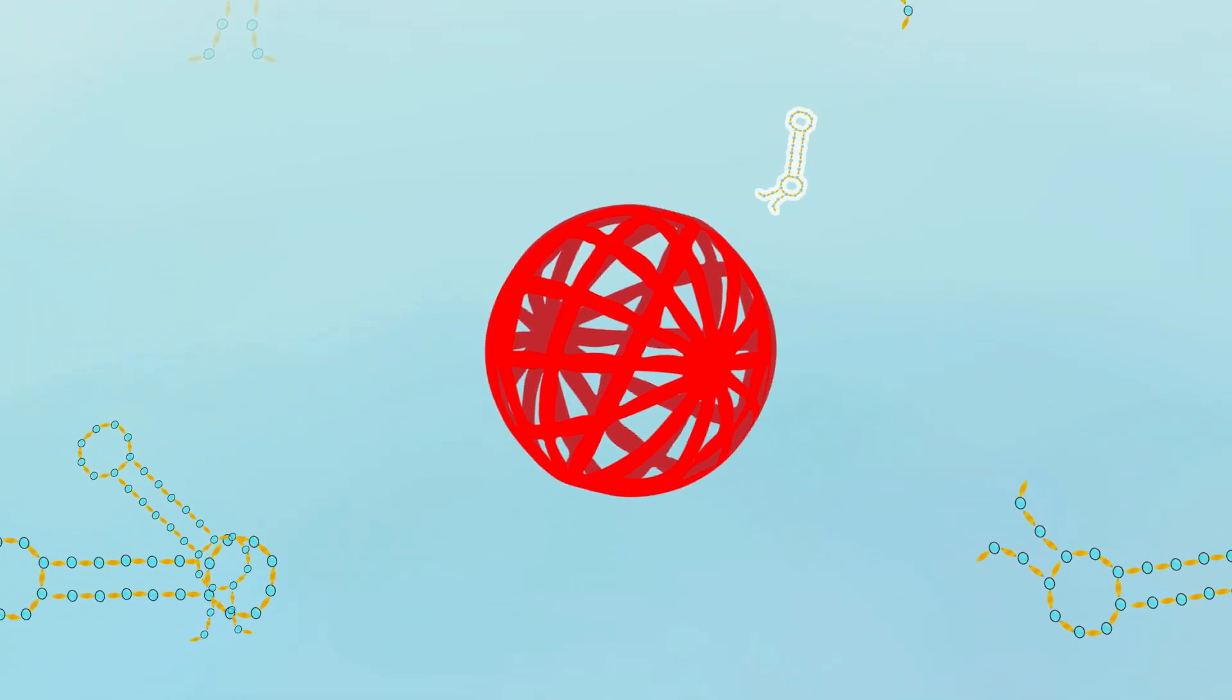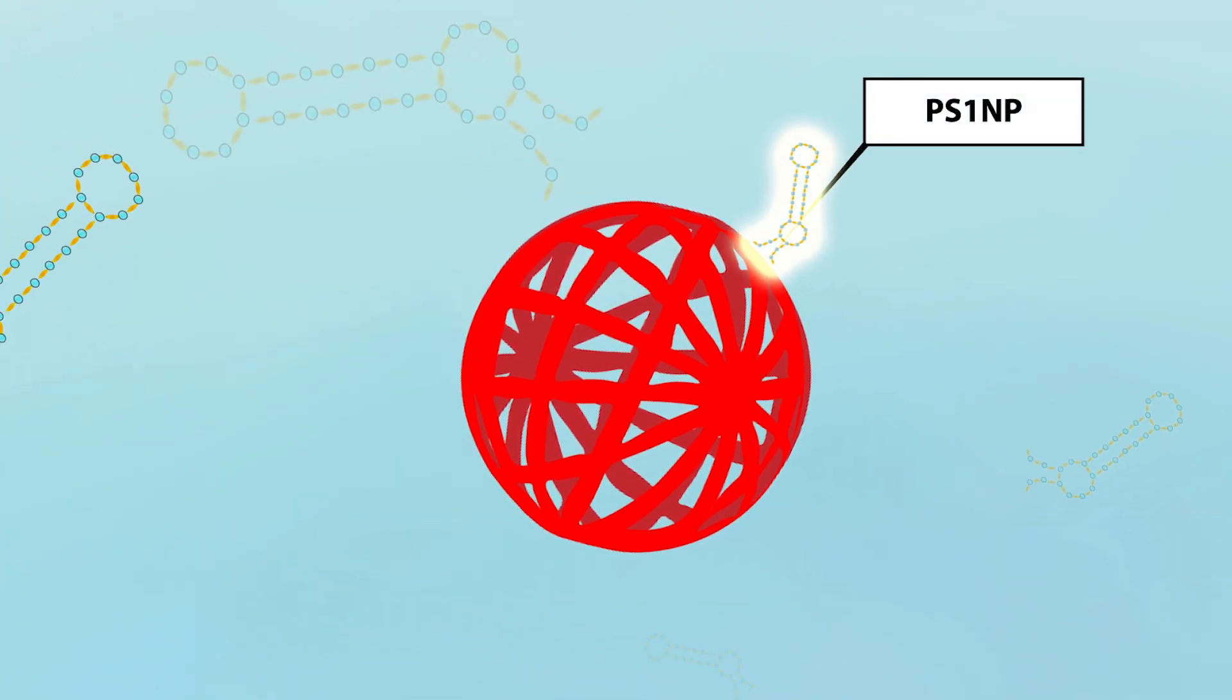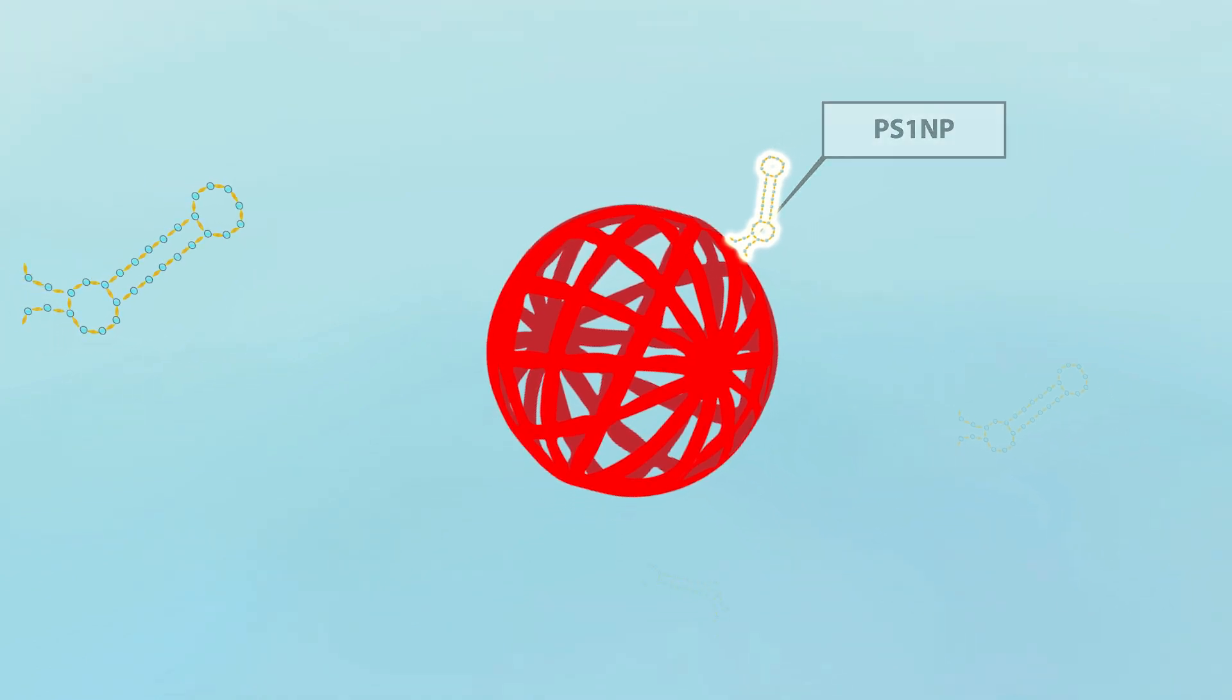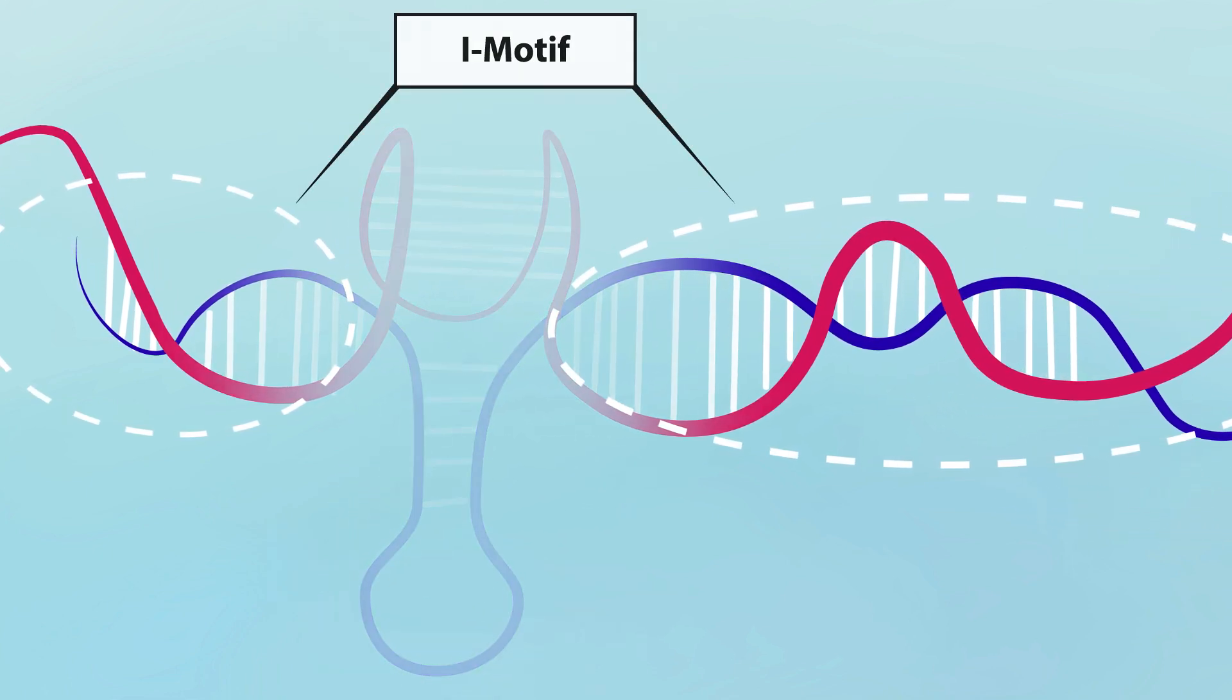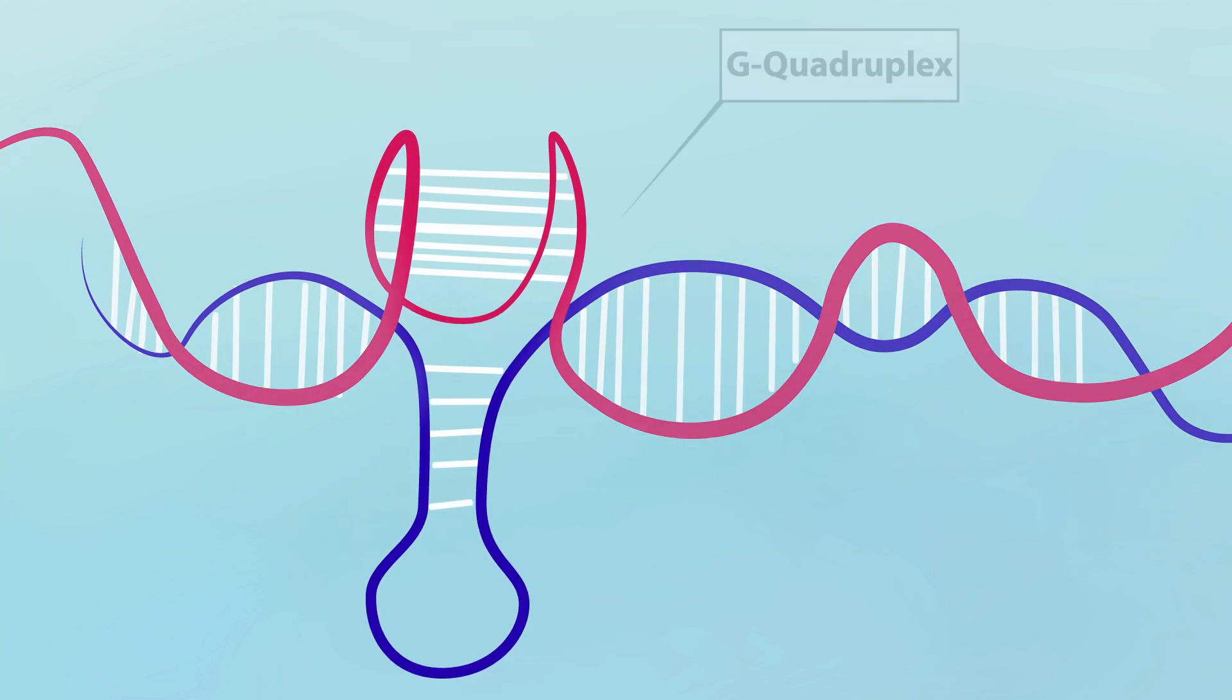For our nano clue structure, we attached an aptamer specific to Hodgkin's lymphoma cells and drug-loaded DNA duplexes. The duplex encodes two structures, the i-motif and the G-quadruplex.